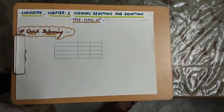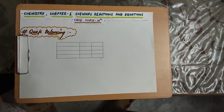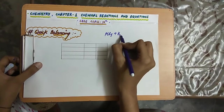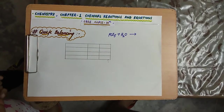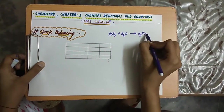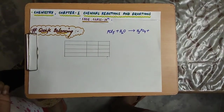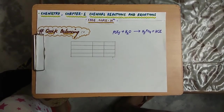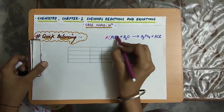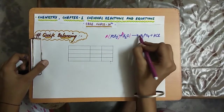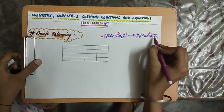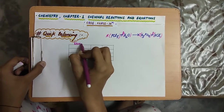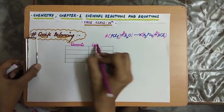Let us take an example of an equation: phosphorus pentachloride, PCl₅, plus water, H₂O, gives phosphoric acid, H₃PO₄, plus hydrogen chloride, HCl. In the quick method, we take a variable A before PCl₅, B before H₂O, C before H₃PO₄, and D before HCl. Now make a table with 3 columns: elements, left side of the equation, and right side of the equation.